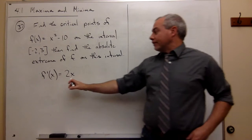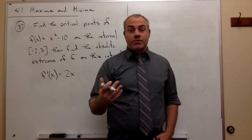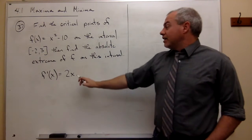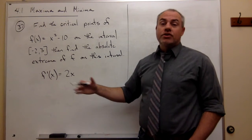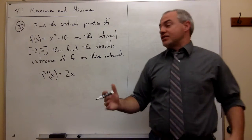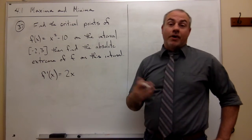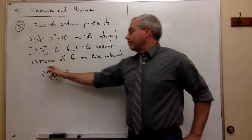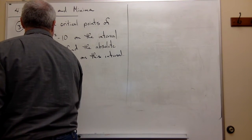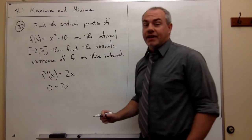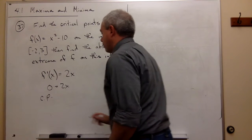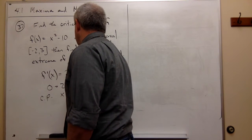Now that I have the derivative of the function, I want to ask: are there any places where this derivative could be zero, or are there any places where this derivative could be undefined? This particular derivative is never going to be undefined — to be undefined, I'd have to have division by zero, and that's never going to happen here. So the only place where I'll get a critical value is if the derivative is zero. I set it equal to zero, solve for x, and I get that a critical point is where x is equal to zero.